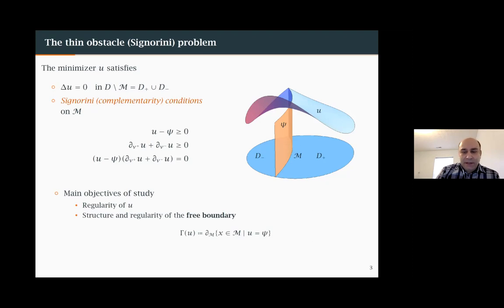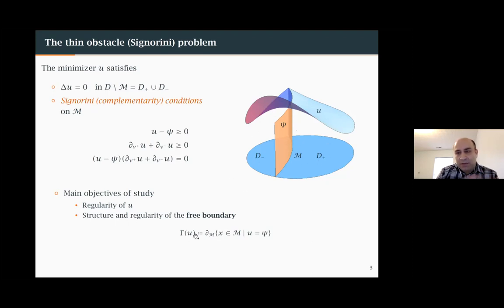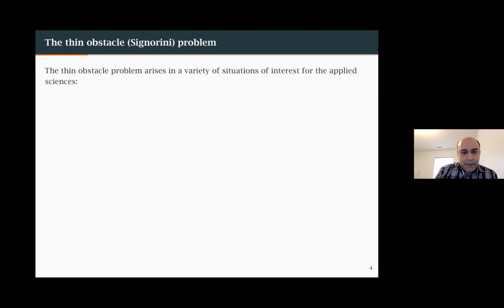The objectives in the study of this problem are twofold: first, the regularity of the minimizer U; and second, the structure and regularity of the so-called free boundary, which is the boundary of the contact set — the set where U equals C. This coincidence set lives on the thin space and is of codimension one, so its boundary is of codimension two, expected to be an object of dimension N minus two.